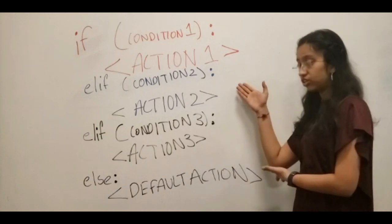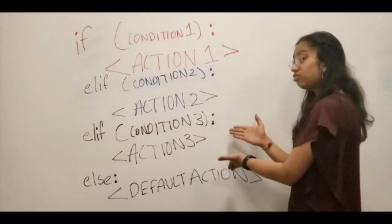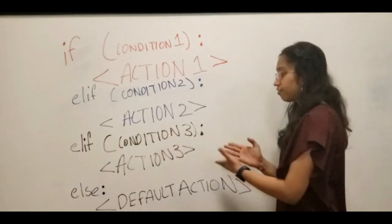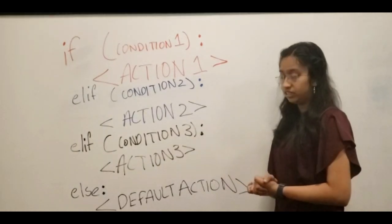If condition 2 isn't met either, the program will check if condition 3 is met. If condition 3 is met, the program will execute the code for action 3 and then move on with the rest of the code.